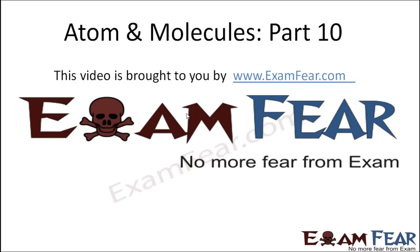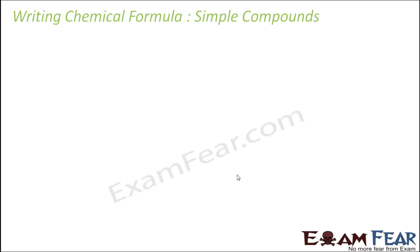Hello friends, this video on Atoms and Molecules part 10 is brought to you by examfier.com. No more fear from exam. So let's take some simple compounds. We'll use the formula or rules we just told you — three rules. First one is the charge is balanced, and the metal is written first; in case of polyatomic ion, it is enclosed in brackets.